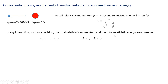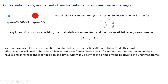In any interaction — such as a collision between this positron and this proton — the total relativistic momentum and the total relativistic energy are conserved. We write this as p_total_initial = p_total_final and E_total_initial = E_total_final, where initial and final are before and after the collision. We can use these conservation laws to find the particle velocities after the collision, but we need to change reference frames to something called the center of mass frame, which requires the Lorentz transformations.